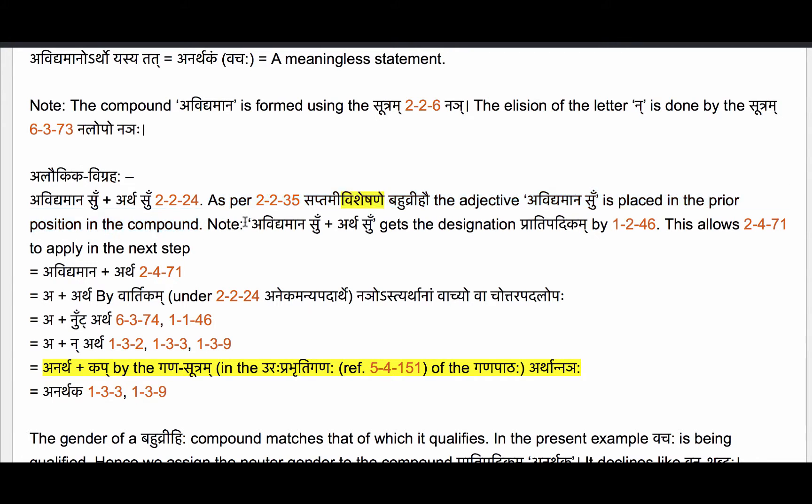Now Avidyamanasu plus Artha Su gets the designation Pratipadika as per 1.2.46 Krith Tadhitha Samasah ca. Because we formed a Samasaha, this allows us to apply Sutram 2.4.71 to perform lopaha (elision) on the sup affixes su and su which are inside the compound Pratipadikam.